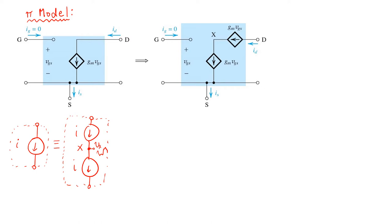Going from left to right, we've simply split the dependent current source GMVGS into two series current sources, both with the same value GMVGS, creating node X in between. Remember that the voltage at node X could be absolutely anything — it really has no effect on the circuit.